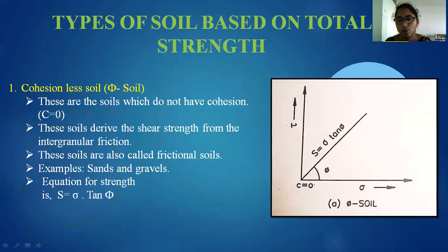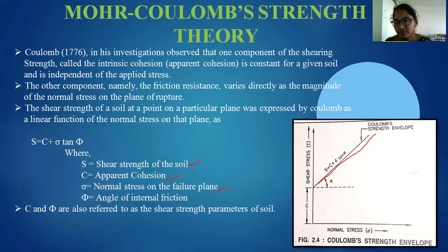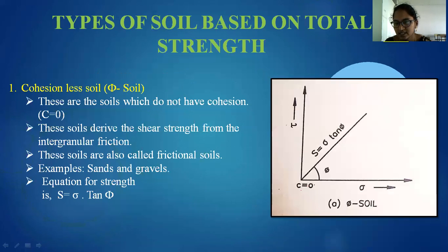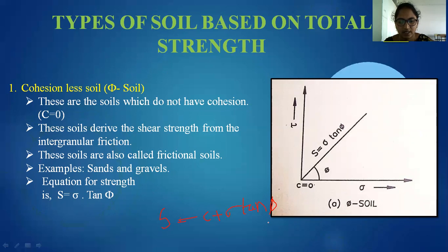Another type is cohesionless soil. The difference in this diagram is that C is equal to zero — the graph passes through the origin from the horizontal. Generally S equals C plus sigma tan φ, but for cohesionless soil C is equal to zero, so the value becomes zero and S equals sigma tan φ.